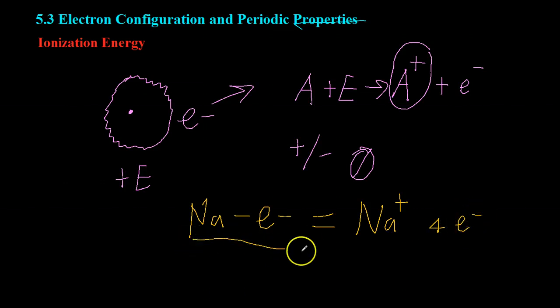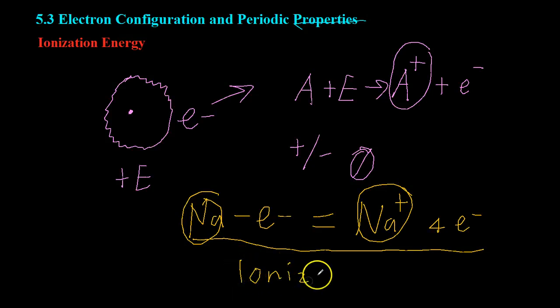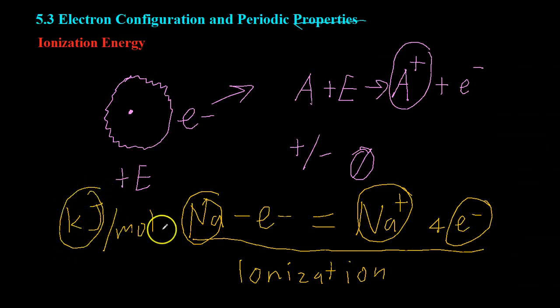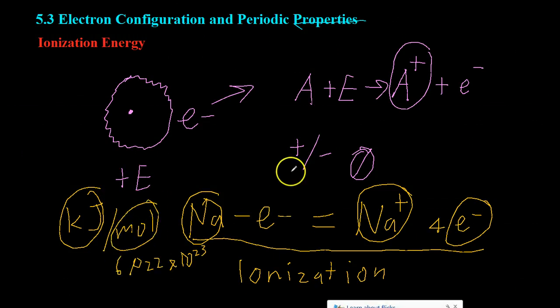Now, any process like this, where you take a neutral atom and end up with an ion at the end, is a process known as ionization. And what chemists will do is, in order to compare how easily elements can give up this electron, they will measure the energy required to remove one electron from a neutral atom, like sodium. And this is measured in kilojoules per mole, meaning the amount of energy in kilojoules required to remove electrons from one mole of substance.